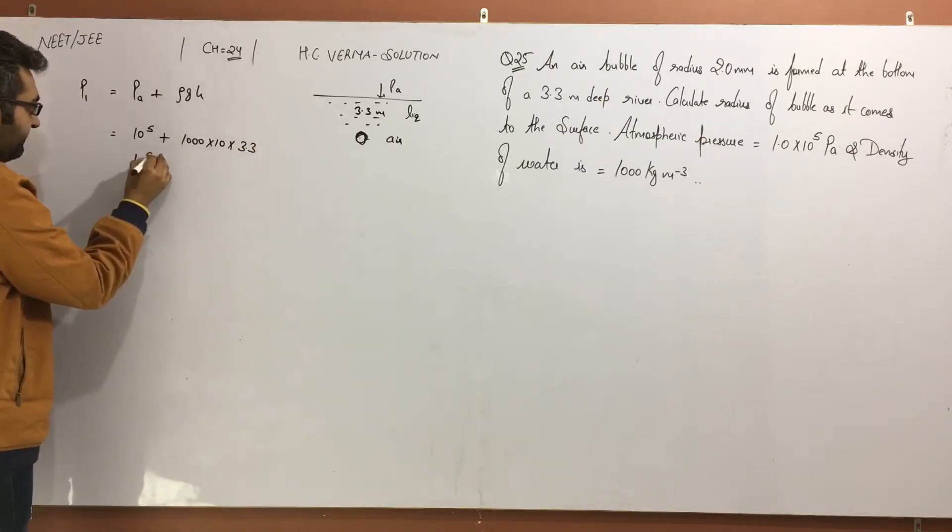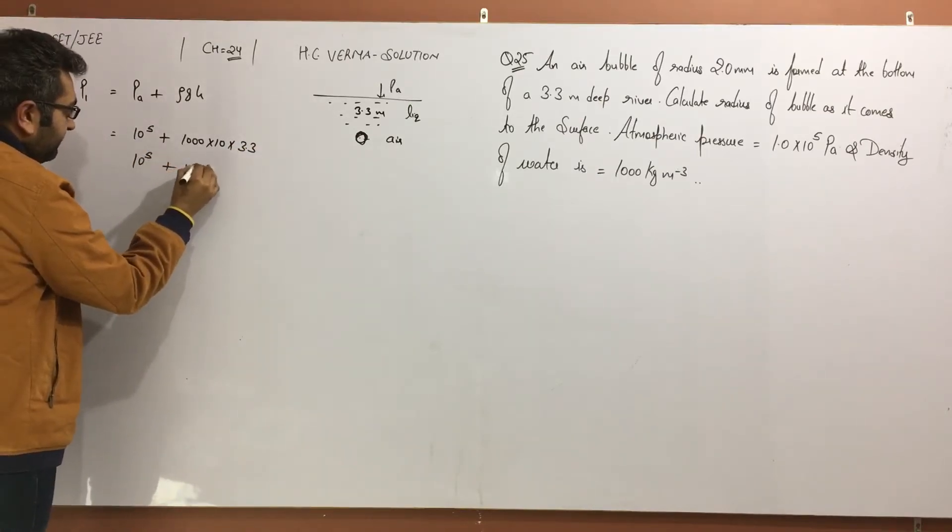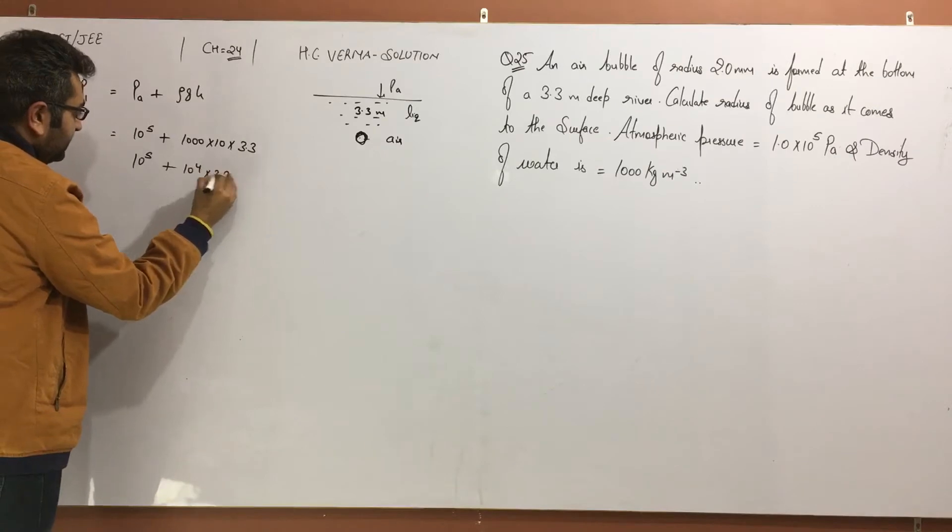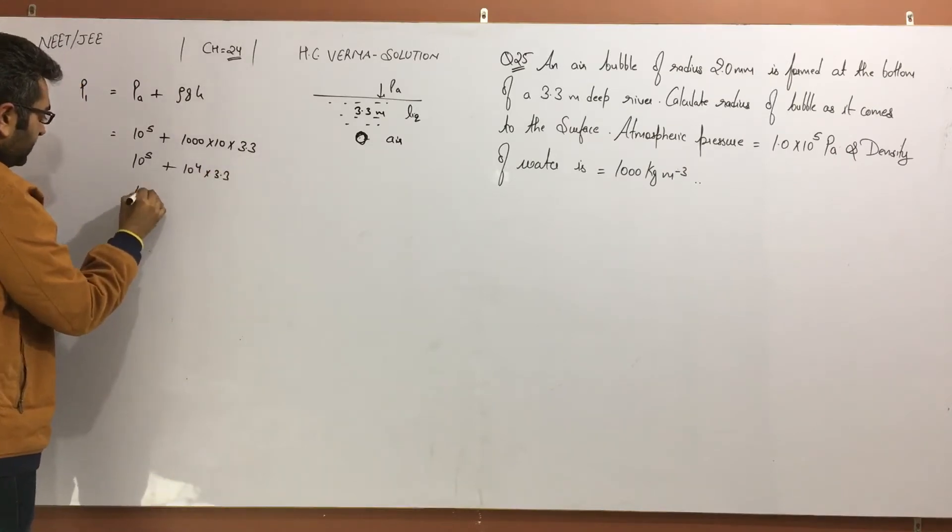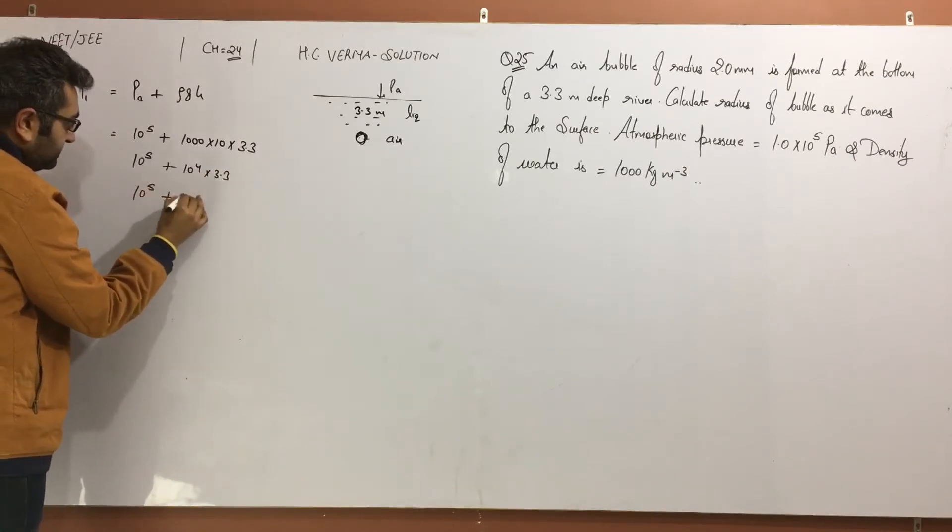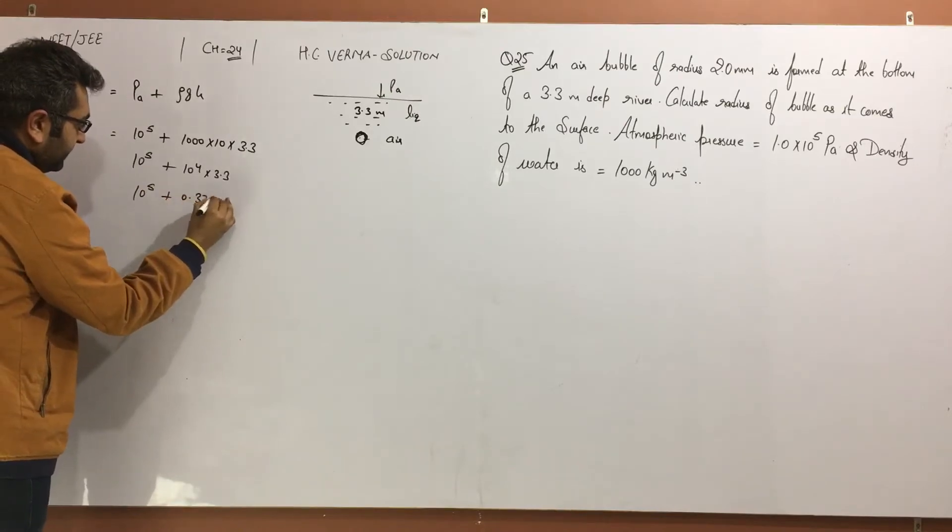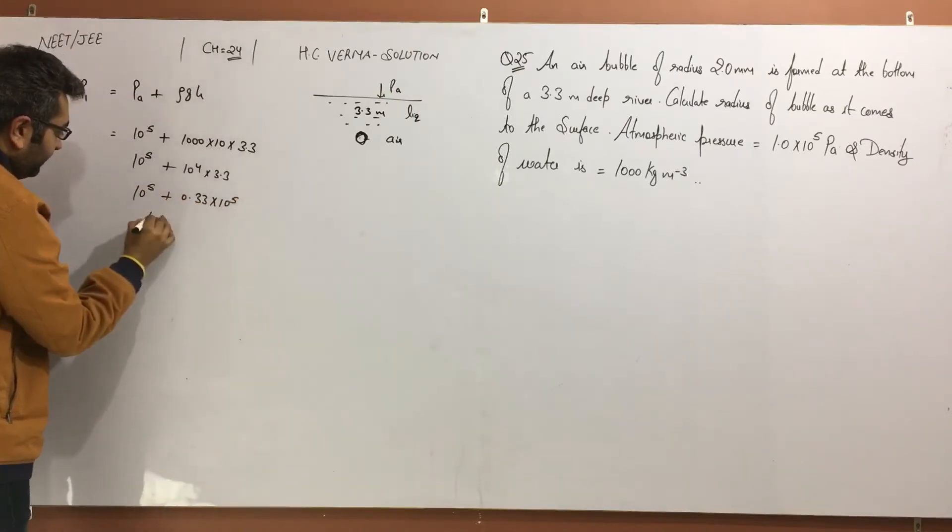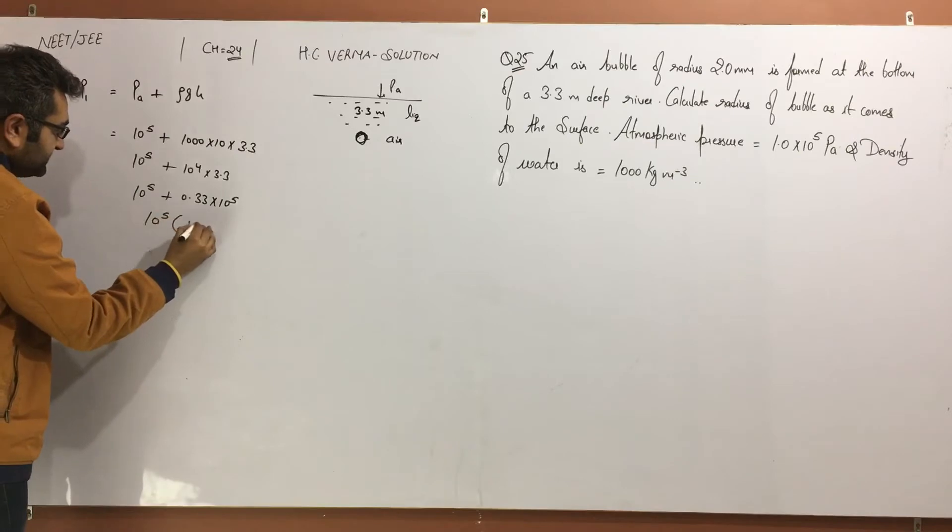10^5 plus 10^4 times 3.3. Converting to 10^5, this becomes 0.33 times 10^5. Taking 10^5 common, I get 1.33. So this is 1.33 × 10^5 Pascal.